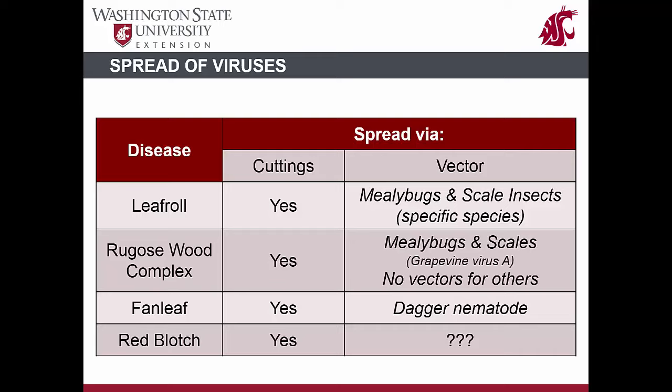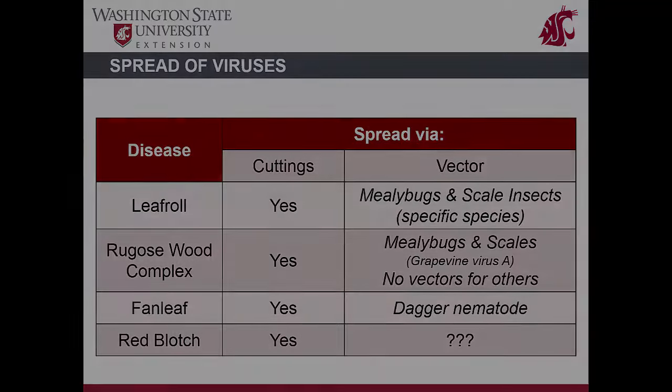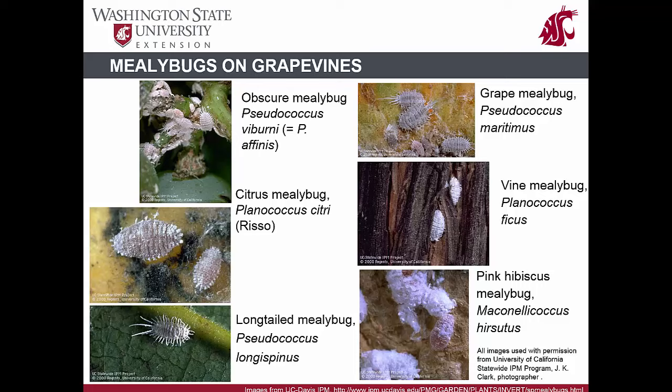At this point, we do not know if the red blotch-associated virus is spread by a vector. In the case of vectors, it is important to know if both the virus and vector are located in the same area. In some cases the vector may be in the area but the virus is not, or vice versa. In these situations, quarantines help reduce the likelihood of disease establishment and spread.